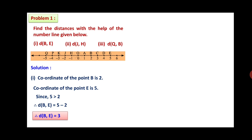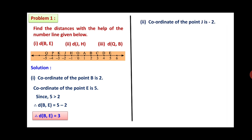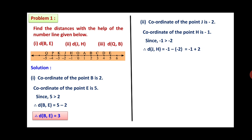Second: coordinates of point J is minus 2 and the coordinate of point H is minus 1. Here, minus 1 is greater than minus 2. Therefore, distance between J and H equals minus 1 minus (minus 2), which equals minus 1 plus 2. So the distance between J and H is equal to 1.